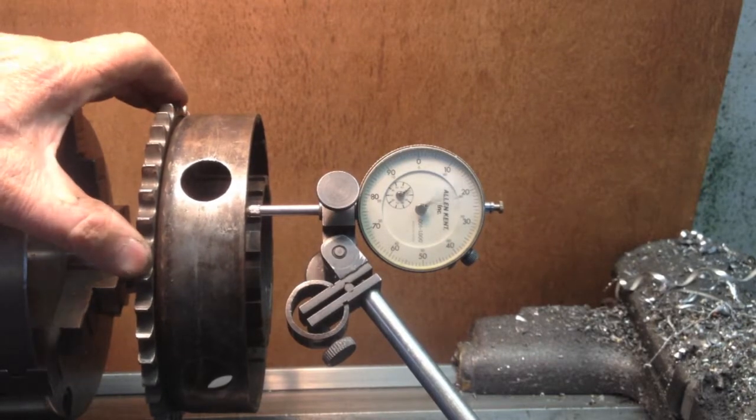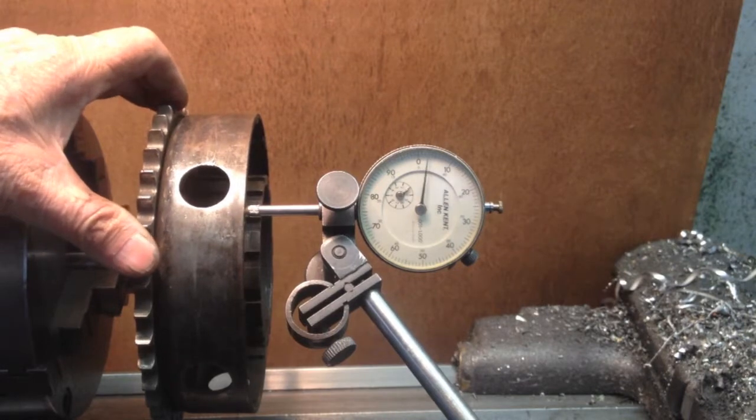The first one is wobble. People complain, my clutch wobbles a little bit. The basket wobbles.